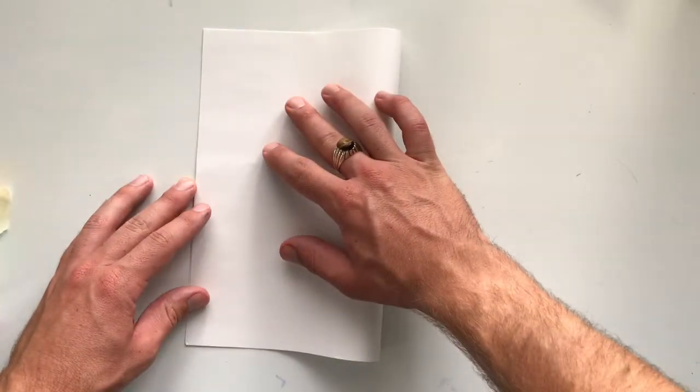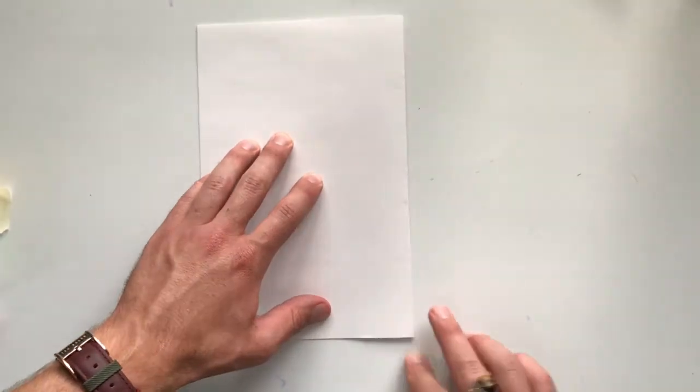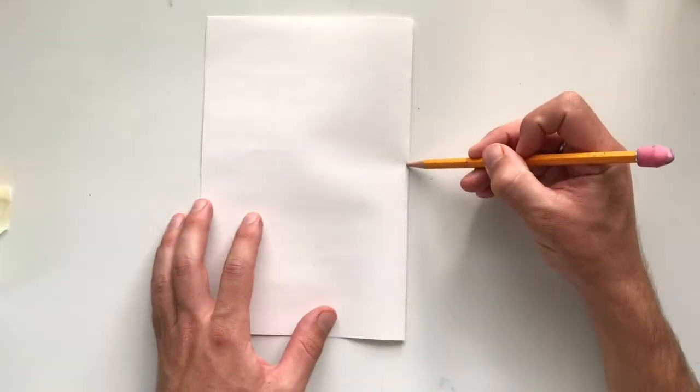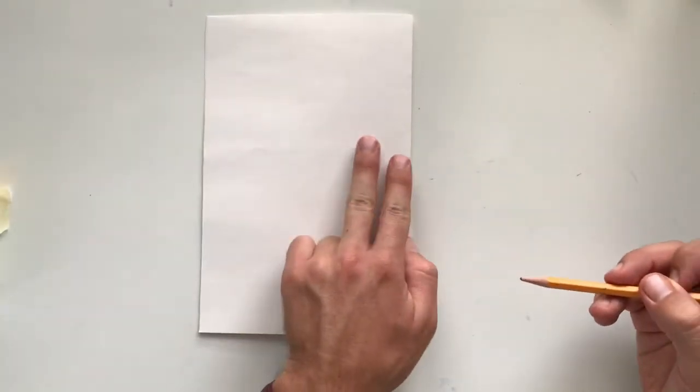First, take your paper and fold it horizontally. Now, draw a dot in the center of the paper.